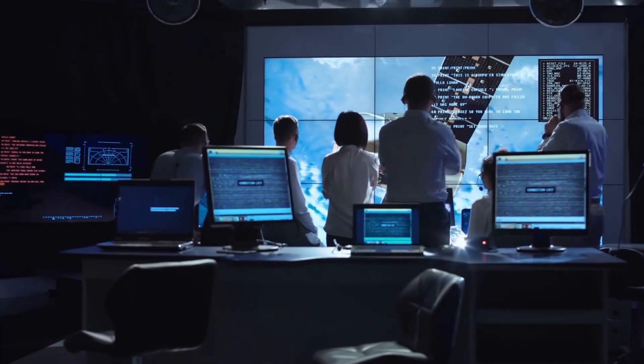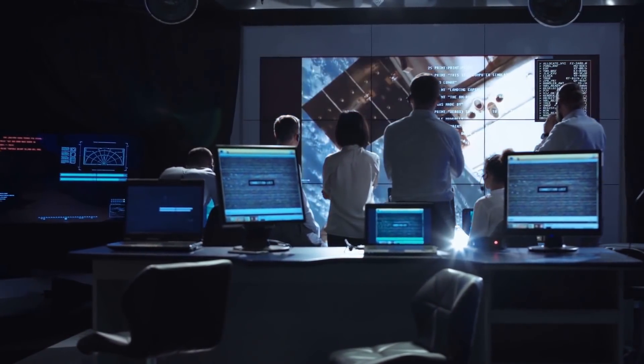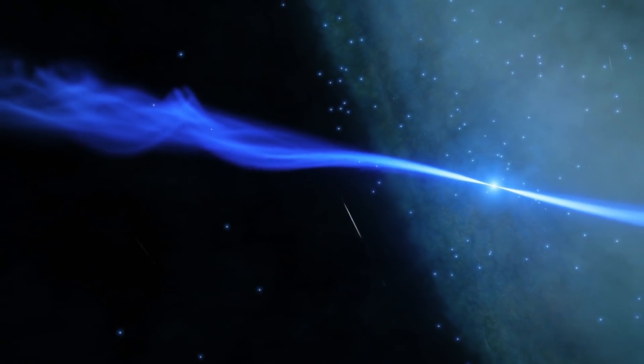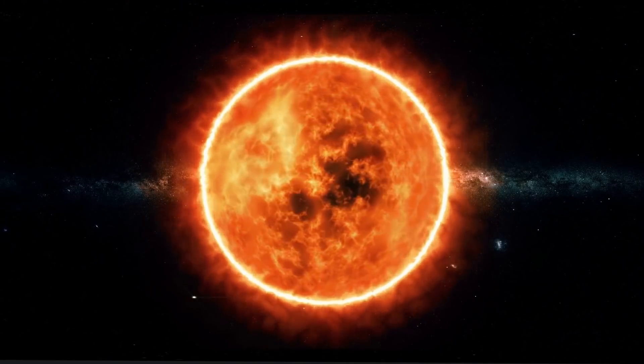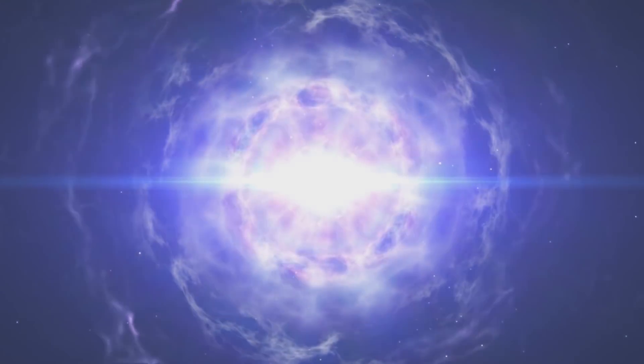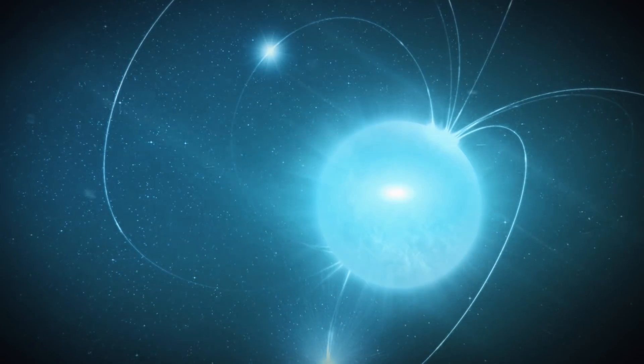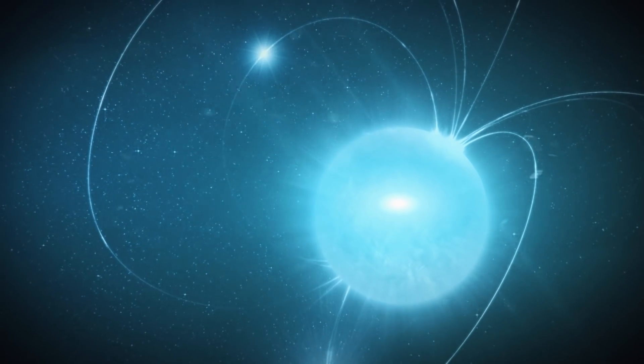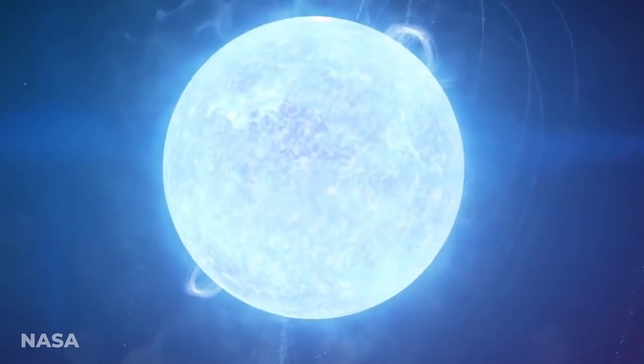Recently, scientists observed a highly energetic star that released a burst of energy so violent that it would take the Sun thousands of years to produce a similar amount, all compressed into a fraction of a second. The star in question is known as a magnetar, which is a type of neutron star.